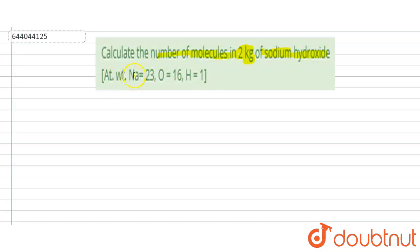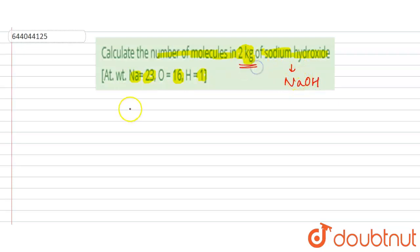We are given the atomic weights: Na = 23, O = 16, and H = 1. The formula of sodium hydroxide is NaOH, and the weight given is 2 kilograms.